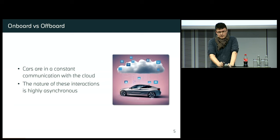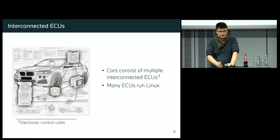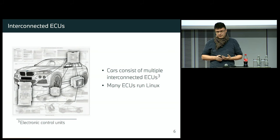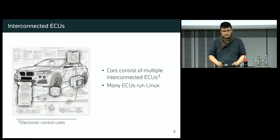What kind of software is there? First, if you look outside the car, there is software in the cloud — so-called off-board software. The car stays connected to the cloud all the time, mostly unless you are somewhere in a tunnel. This interaction is highly asynchronous by its nature — it's not like you do a request to the cloud and then get a response; you do a lot of things at the same time.